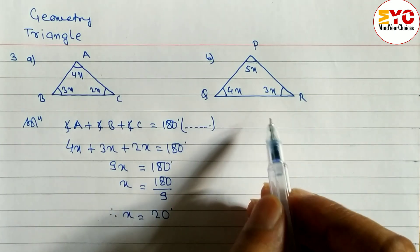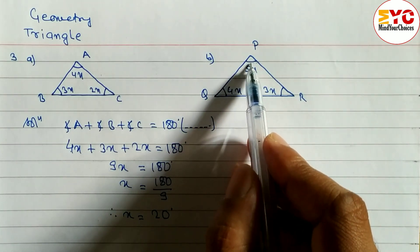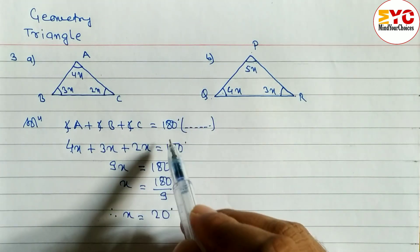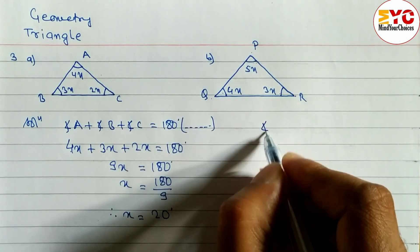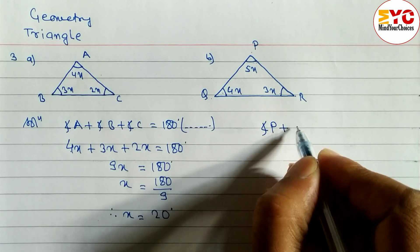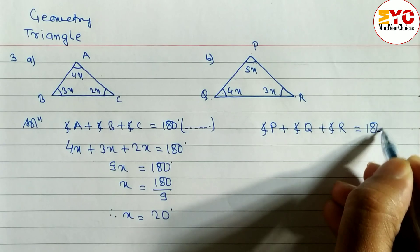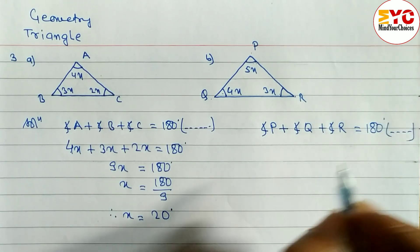Look at this question. This question also similar type of question. So when you add these three angles angle p, angle q, angle r we get 180 degrees. Reason same, the sum of angle of the triangle. So angle p plus angle q plus angle r is equal to 180 degrees, sum of angle of the triangle.